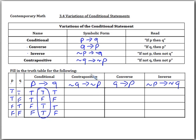Now let's find the truth table for the contrapositive. For negation Q, we want to negate Q, so we switch those to: false, true, false, true. For negation P, we switch those to: false, false, true, true.